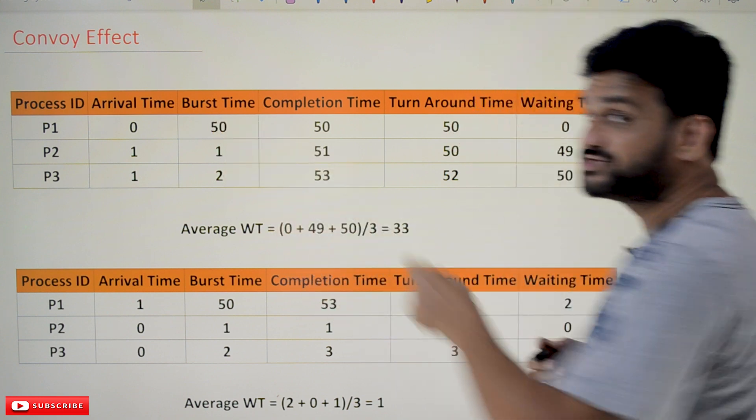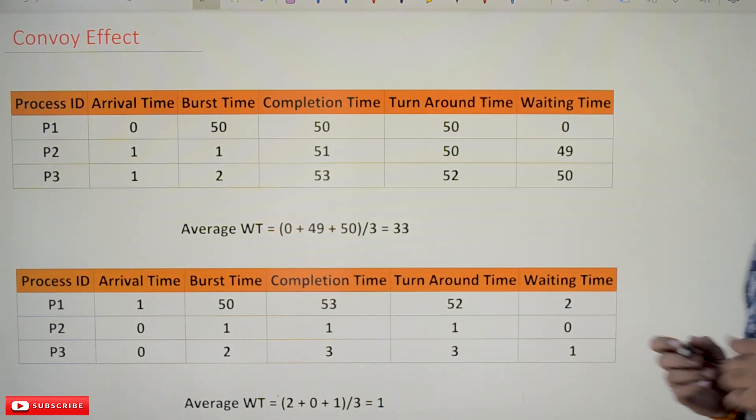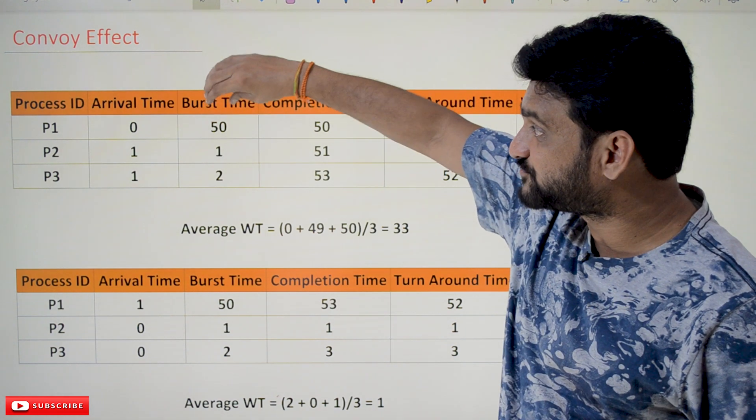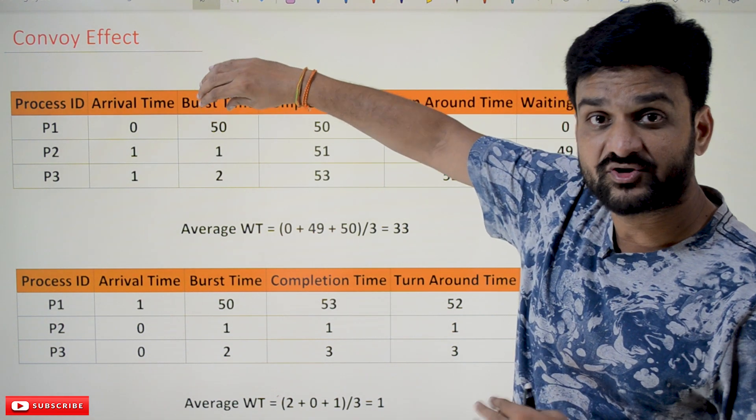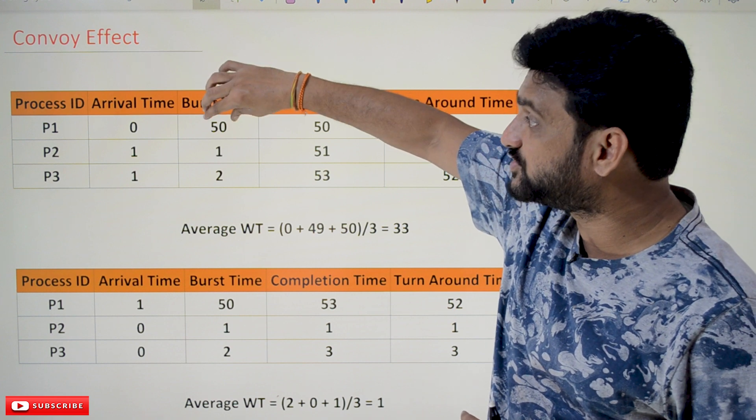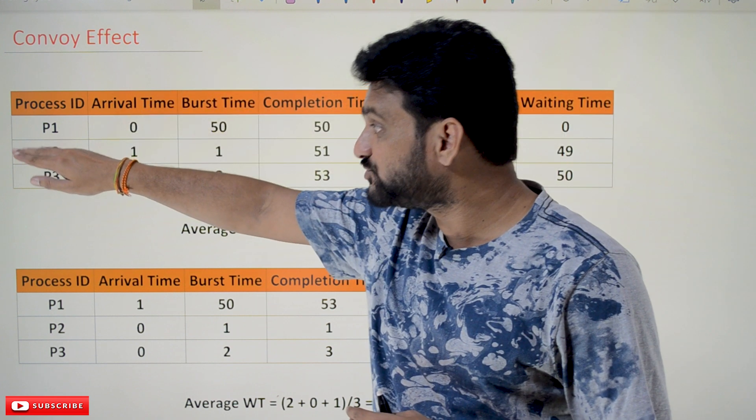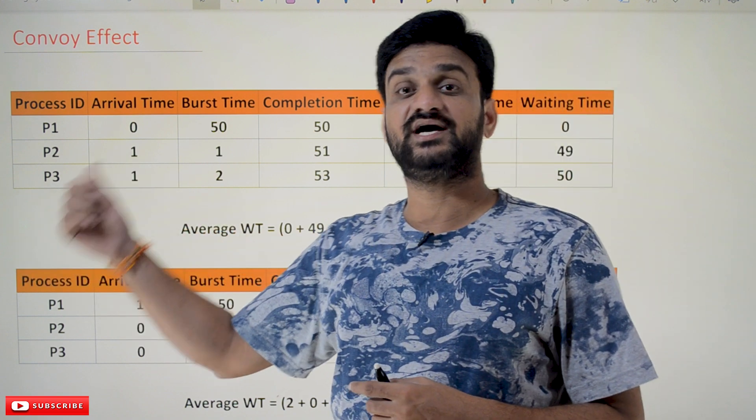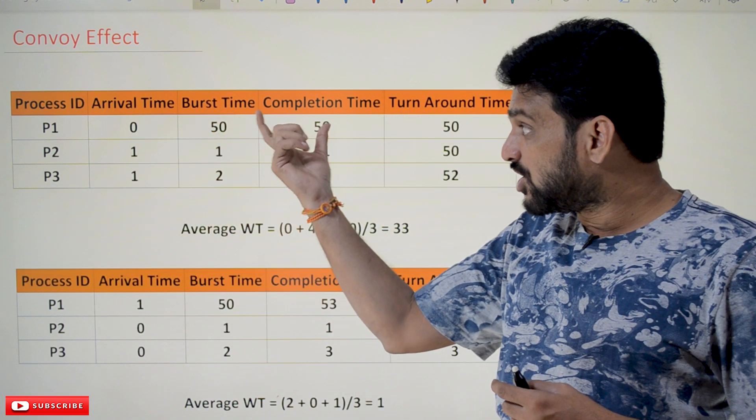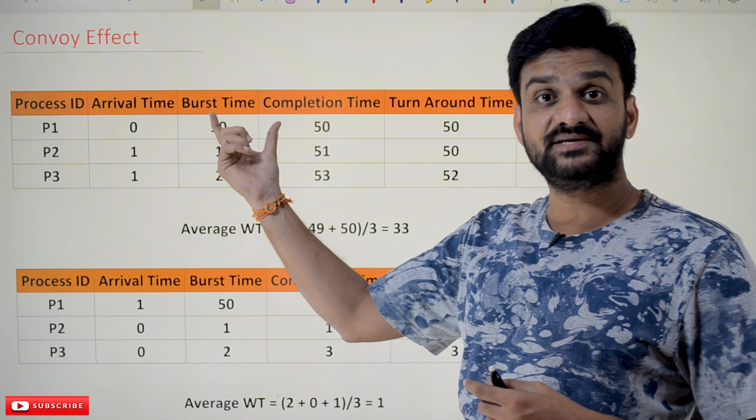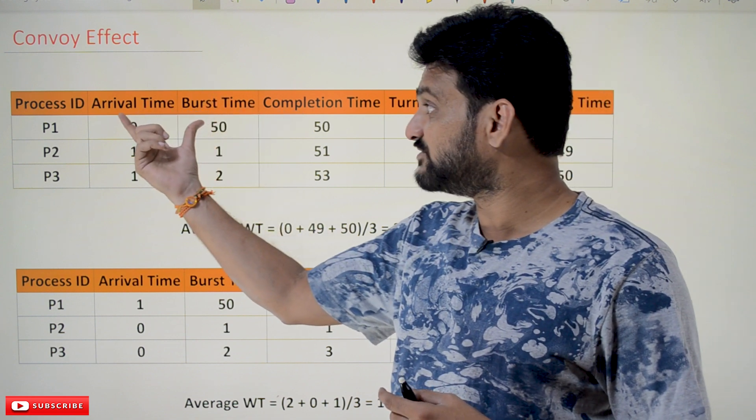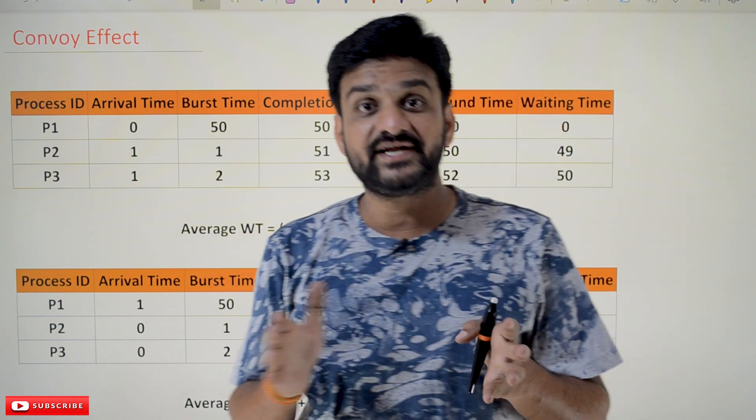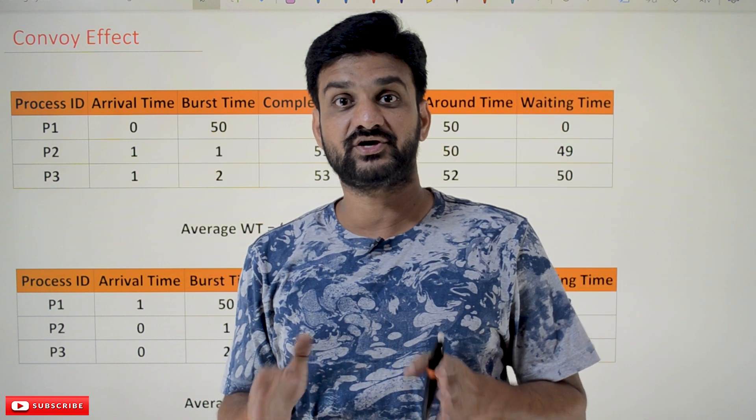So what happens is, until the completion of this entire process—these 50 units of time—before the completion of these 50 units, processes P2 and P3 have to wait. Now what happens with this long burst time, with this arrival time chosen as the main criteria, is the average waiting time will increase.